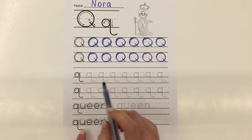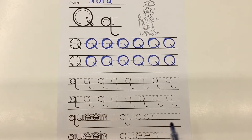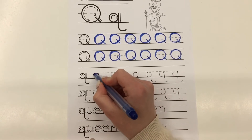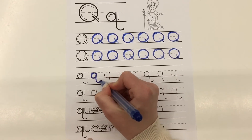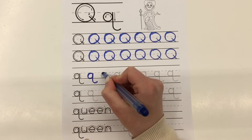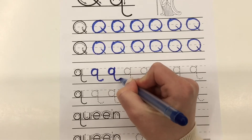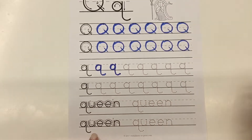Now, let's write the small letter Q. Look — round and down. Round and down. Now, let's write faster.